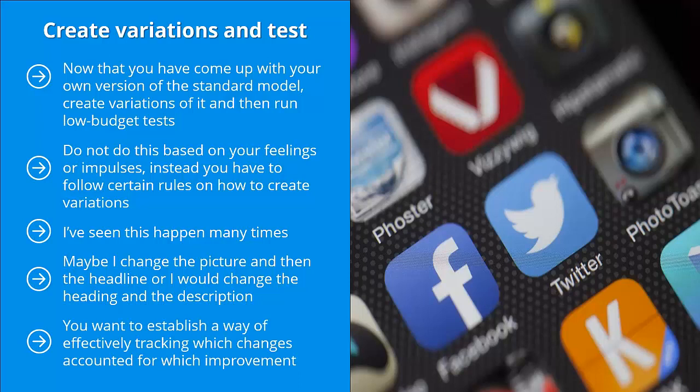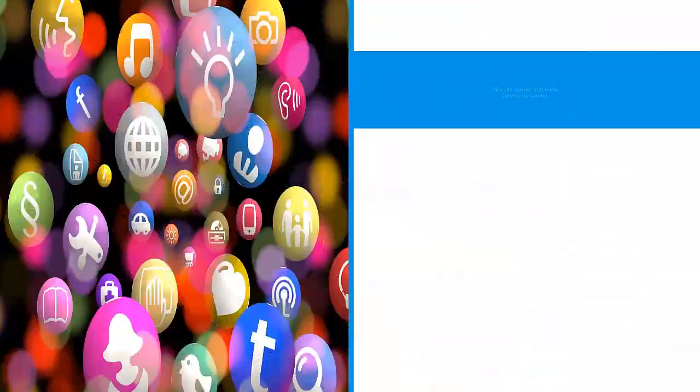You want to establish a way of effectively tracking which changes accounted for which improvement. By using this method, you can optimize parts that work to reach peak convertibility, and then work on the other elements of the ad that could use some improvement. However, you have to do this in a systematic way.